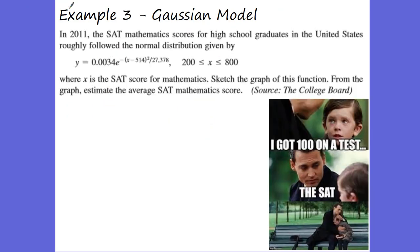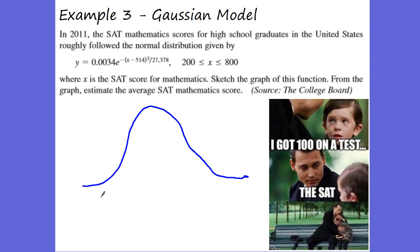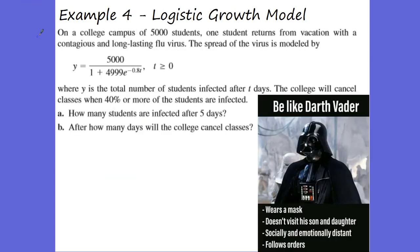We might also look at SAT scores. We can sketch the Gaussian model function on a graphing calculator or GeoGebra. When we graph this Gaussian model, we see the curve rise and fall, and we can find the maximum, which represents the average SAT score — something like 520 on this example. By graphing Gaussian models and finding the maximum, we can determine average values.